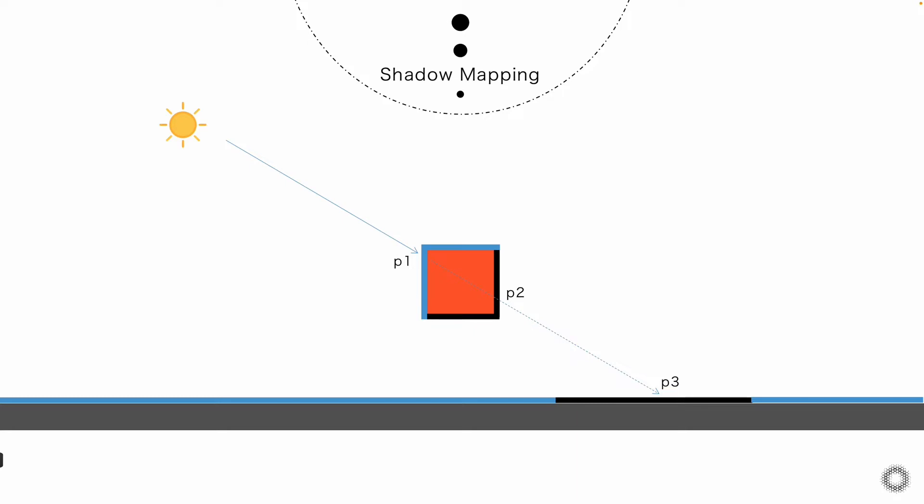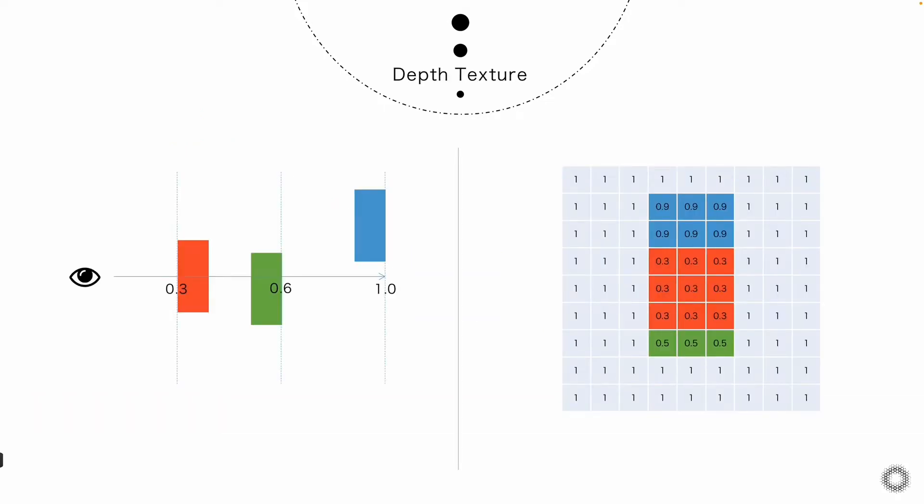But considering there are thousands of fragment elements, it's going to be very expensive to calculate. So we usually make an approximate approach where we don't have to manually calculate intersections of the rays. Here we are going to use the GPU drawing mechanism, which is depth buffering.